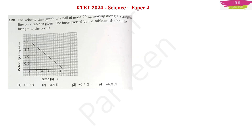The first question which needs correction from the answer key point of view is this one. The question is: the velocity-time graph of a ball of mass 20 kg moving along a straight line on a table is given. The force exerted by the table on the ball to bring it to rest is?